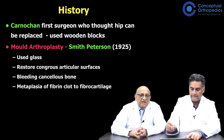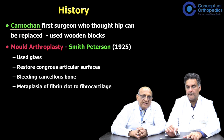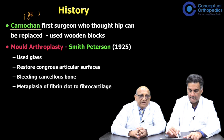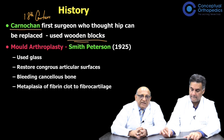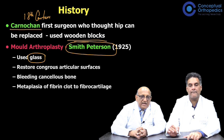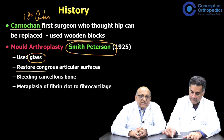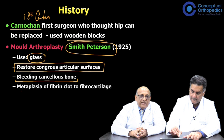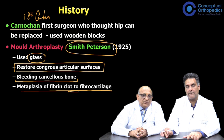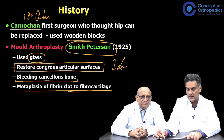Looking at the history of hip replacement: far back in the 18th century, Carnochan was the first surgeon who thought the hip could be replaced, and he used wooden blocks. With further progress in 1925, Smith-Petersen introduced the concept of mold arthroplasty and used glass to replace the head of the femur, restoring congruous articular surfaces. However, these did not sustain for any length of time and had very poor longevity.